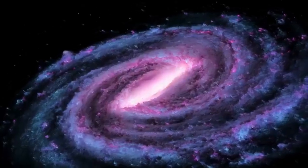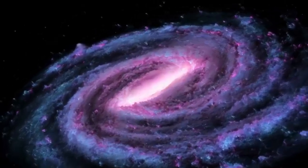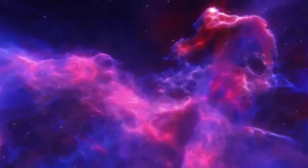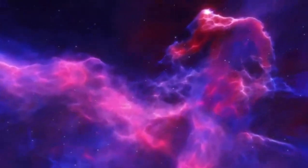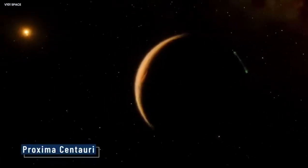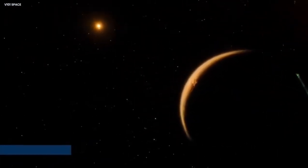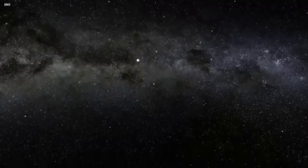Proxima Centauri B, or just Proxima B, is sometimes referred to as Alpha Centauri CB. It is a super-Earth exoplanet and it orbits an M-type star. Super-Earth, exoplanet, M-type star—confused yet? Do not worry, since this video will quell all of your burning questions.